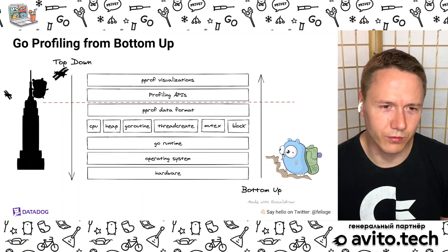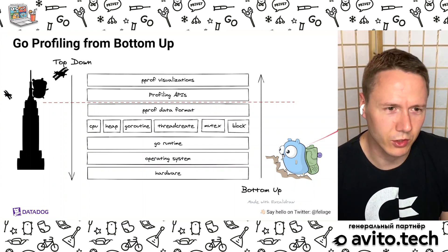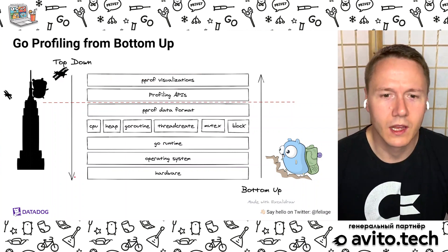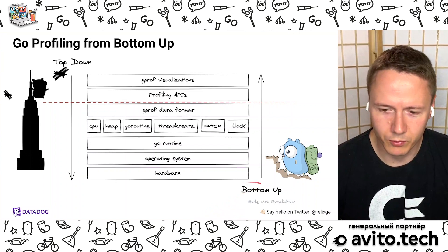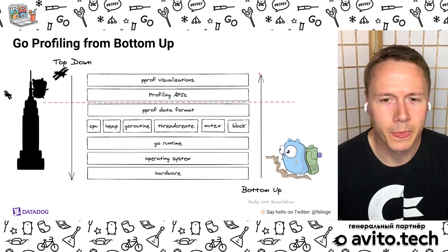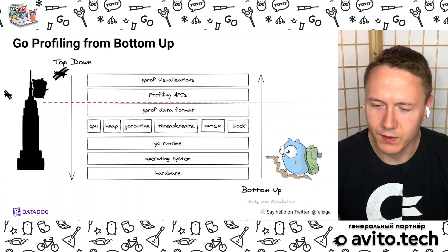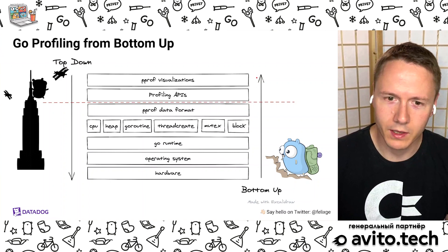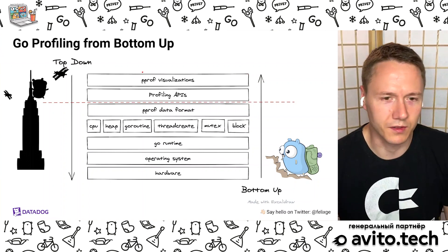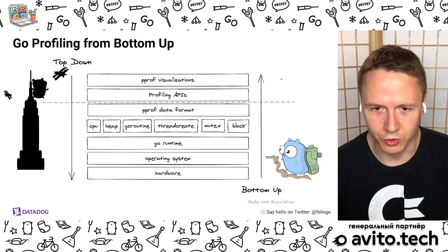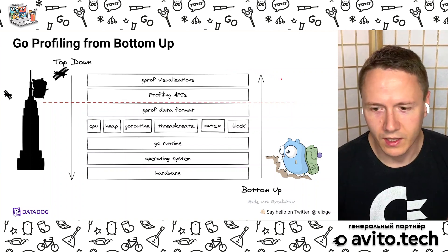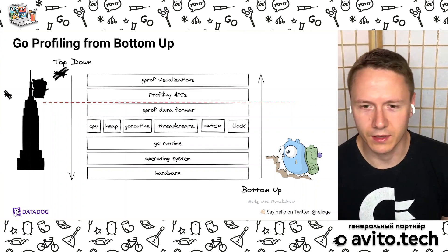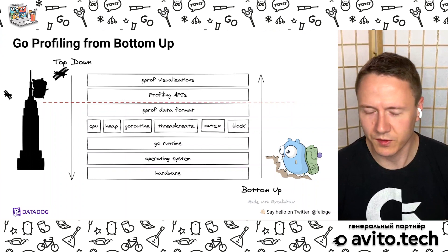We'll do this in a bit of an unusual format. Instead of going top down like most presentations, where we might start with visualizations and work our way down, we'll do the opposite and start at the bottom with low-level stuff and work our way up. Because we don't have infinite time, we'll cover a lot of low-level stuff but might not make it all the way to the top — so today we're not going to talk about visualizations. Hopefully this approach will be interesting regardless. You will need a little patience, because we will not directly start with profiling, but you'll see it all makes sense in the end.